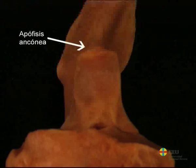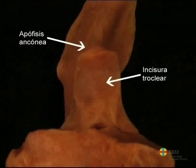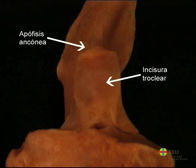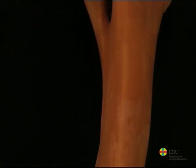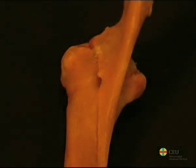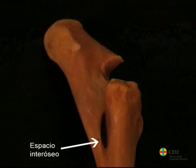This fits into the olecranon fossa in the humerus. Distal to the anconial process, there is the trochlear notch, which articulates with the trochlea of the humerus. The body of the ulna is very small and is located caudally to the radius, to which it is completely attached, except in an area of the proximal part in which they form the antebrachial interosseous space.